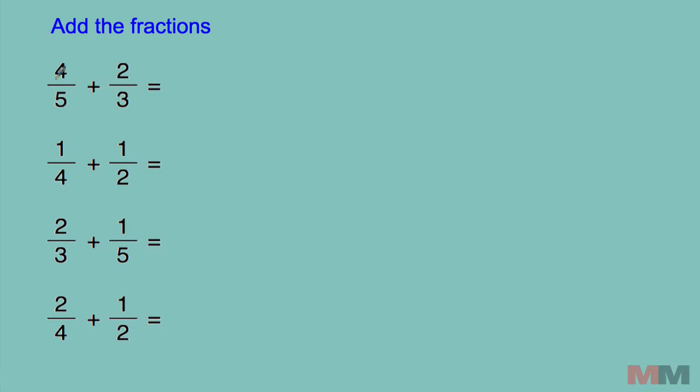First, biggest mistake that people do is that they just add straight across, meaning they would do 4 plus 2, write that as 6, 5 plus 3, 8. That is a no. Biggest mistake right there. I wish it was that easy, but this method is not that bad.